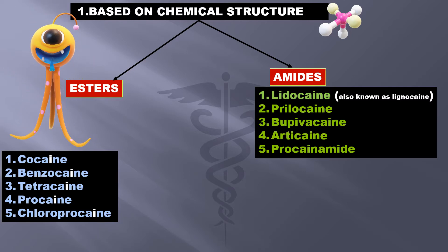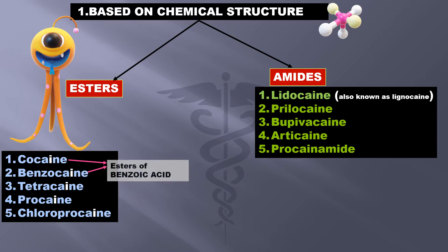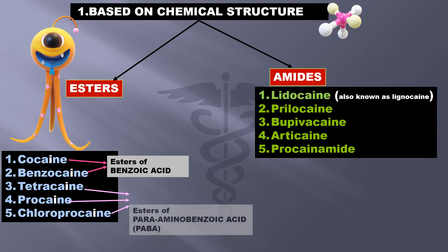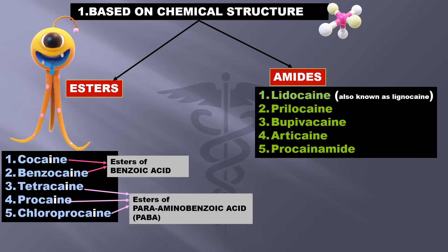An easy trick to remember their difference is to remember that esters have one 'i'. Cocaine and benzocaine are esters of benzoic acid, while tetracaine, procaine, and chloroprocaine are esters of paraaminobenzoic acid. A separate detailed video about the difference between esters and amides will be provided, where the single 'i' of the esters is highlighted for quick understanding.